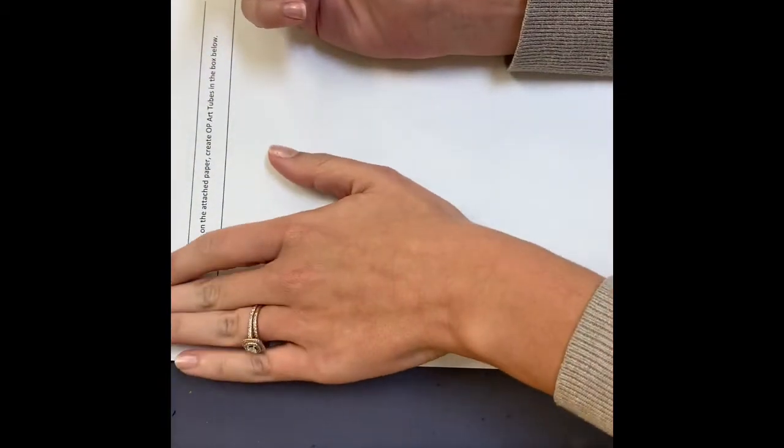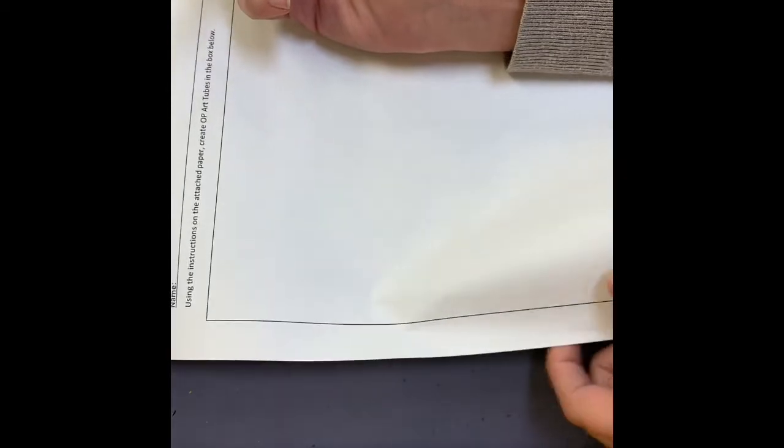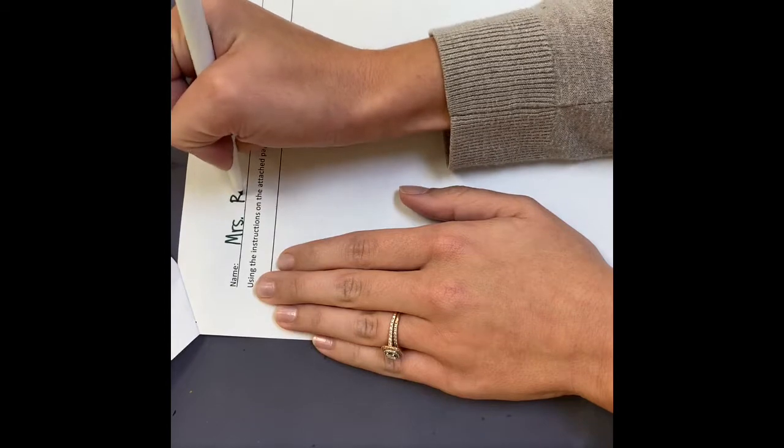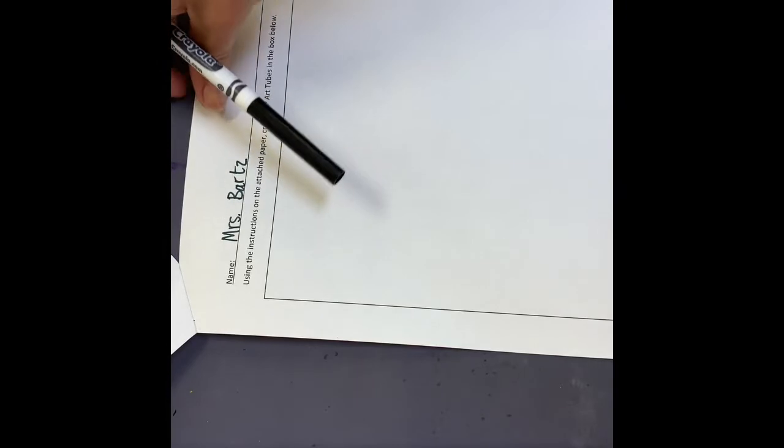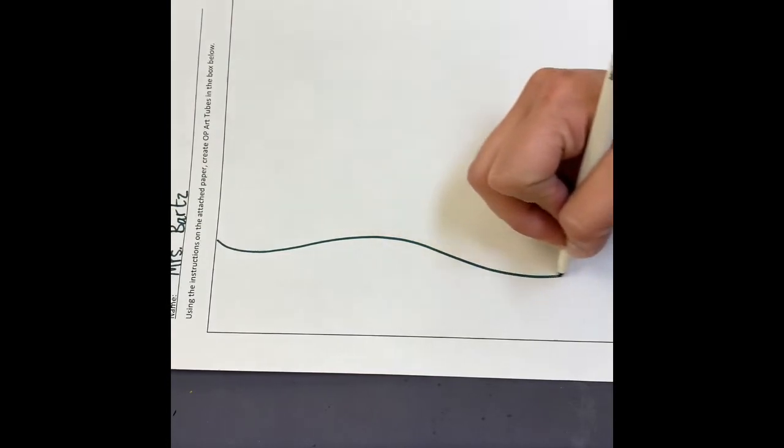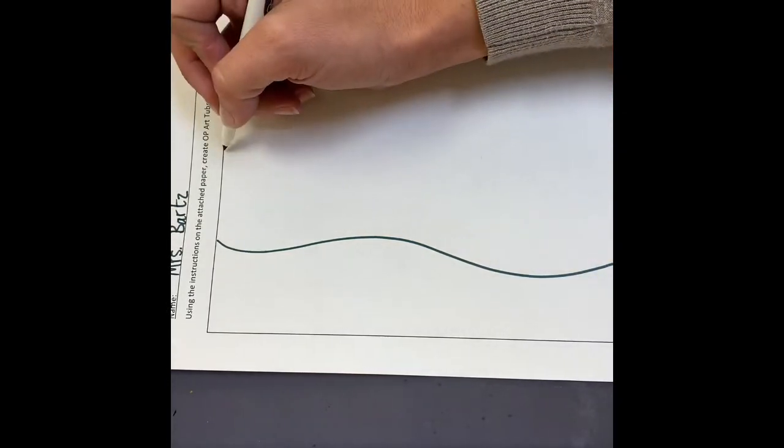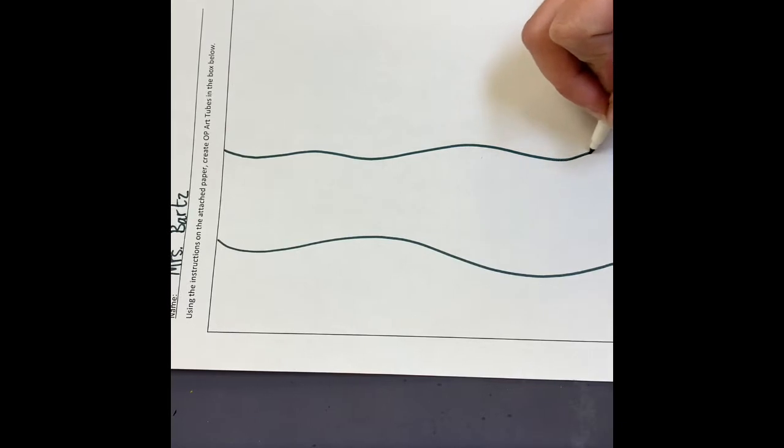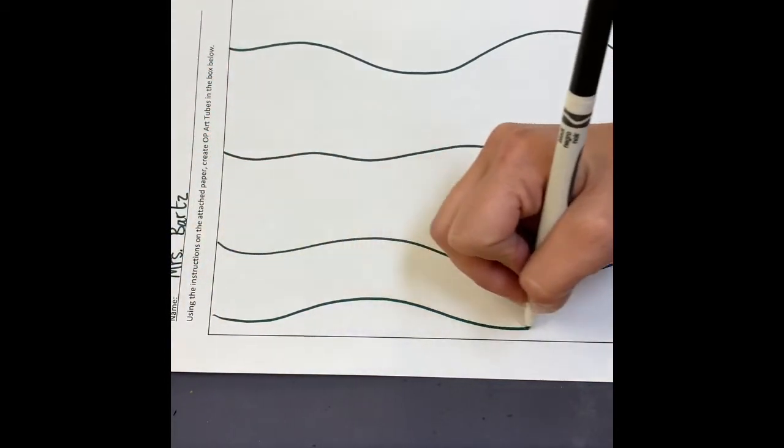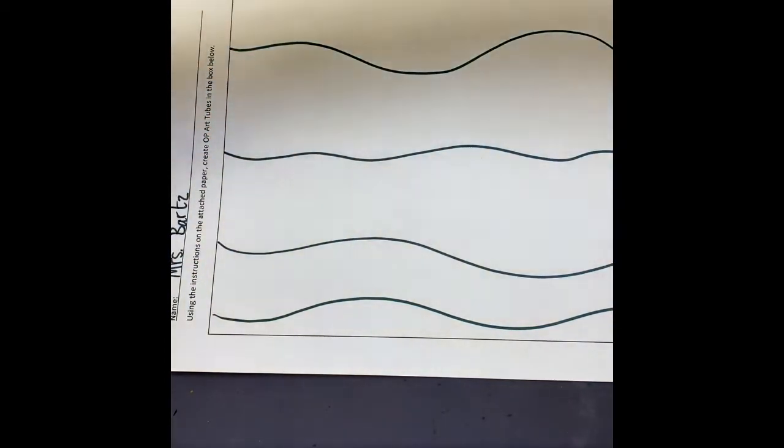So on the exercise page, we need to first write our name, and then it said four vertical wavy lines. So we have our box here that we're gonna draw in, and I'm gonna do my four wavy lines. I'm gonna cut myself short there and we'll have some skinny and some big in my case here.